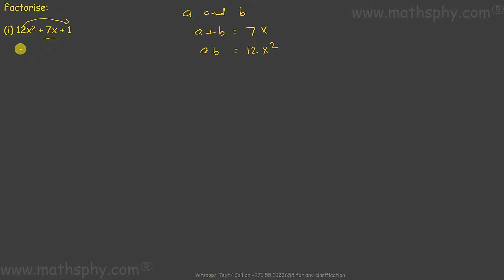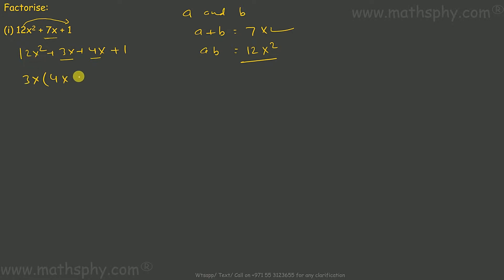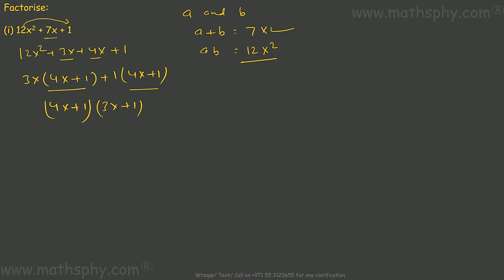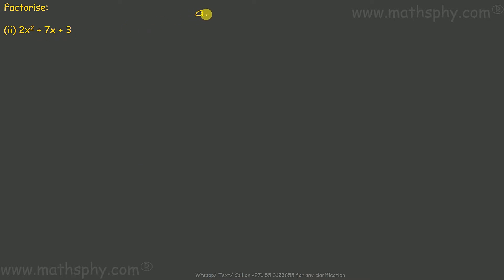For the first polynomial, if I split 7x as 3x plus 4x: 3x plus 4x gives 7x, and 3x times 4x gives 12x squared — so the split works. Now taking 3x as common gives (4x + 1), and taking 1 as common also gives (4x + 1). So I can take (4x + 1) as common, giving the factors (4x + 1)(3x + 1).